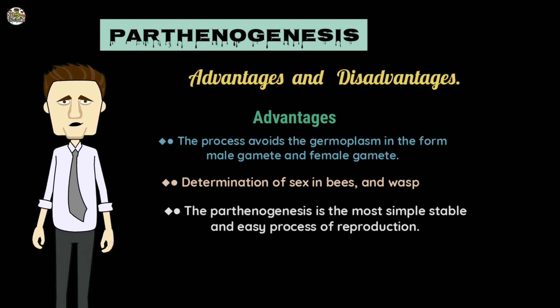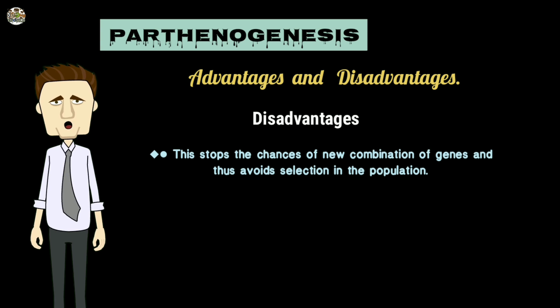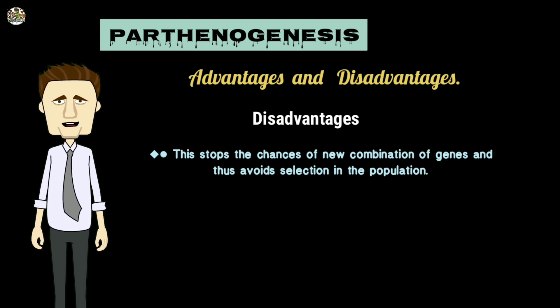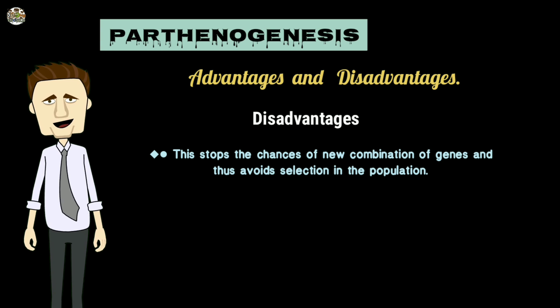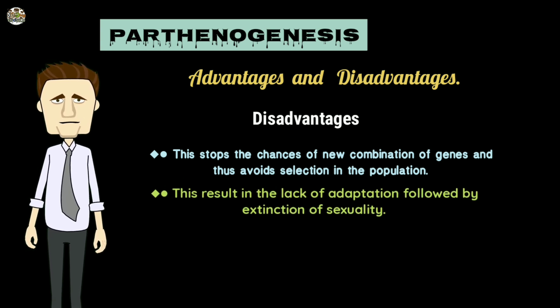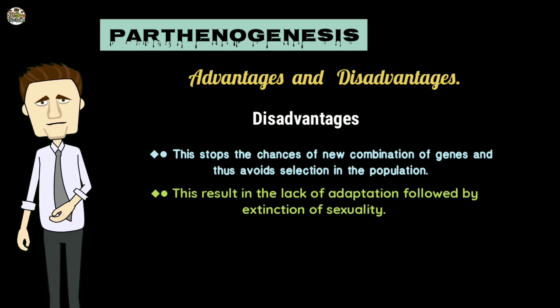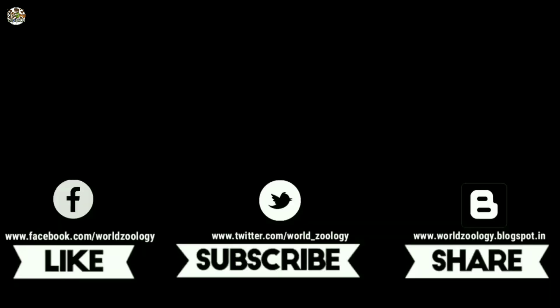Parthenogenesis is the most simple, stable, and easy process of reproduction. Disadvantages: it stops the chances of new combinations of genes and thus avoids selection in the population. This results in a lack of adaptability, followed by extinction of sexuality.